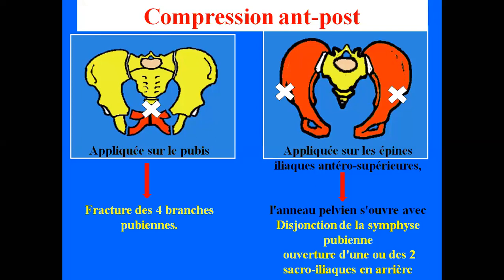Premièrement, les compressions antéropostérieures. C'est l'exemple d'un ouvrier dans un chantier écrasé contre le mur par un engin. Si cette force est appliquée sur le pubis, on aura la fracture des quatre branches pubiennes — une fracture des deux cadres obturateurs. Par contre, si la force est appliquée plus haut sur les épines iliaques antéro-supérieures, on aura l'ouverture de l'anneau pelvien, une disjonction de la symphyse pubienne en avant, avec la possibilité d'ouverture d'une ou des deux sacro-iliaques en arrière. La lésion dépend donc du point d'application de la force.